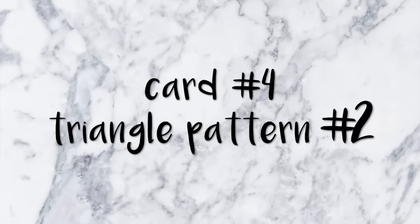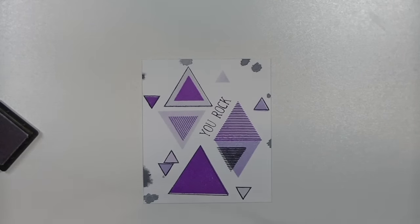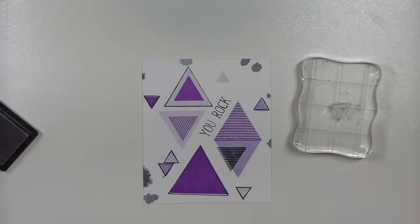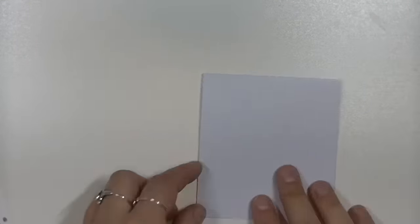Next I'm doing another triangle pattern set. What I did here was off camera because it's kind of like the same thing I did in the first triangle pattern. I just stamped the triangles in a different pattern. I used the same 'you rock' sentiment because I really love it.